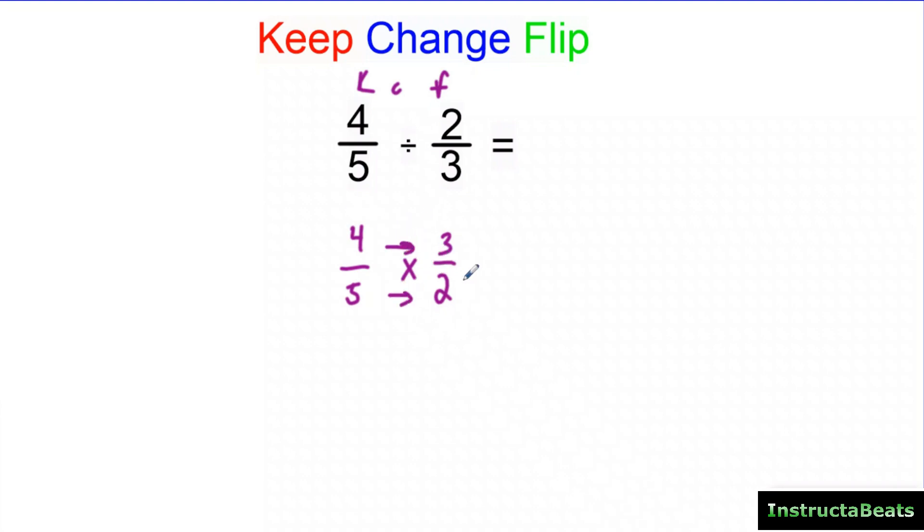And now it's just a fraction multiplication question, right? So we're going to multiply across and we have four times three is 12, five times two is 10. This is an improper fraction. And so we can think about this as 12 divided by 10. And that is going to give us one whole with two tenths left over, or we can even simplify that into one and one fifth. So when we did four fifths divided by two thirds, we got one and one fifth.